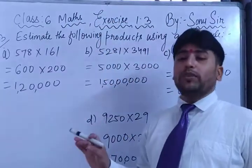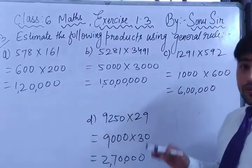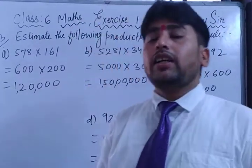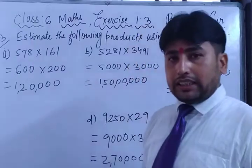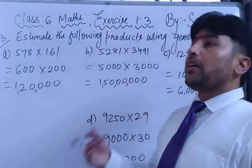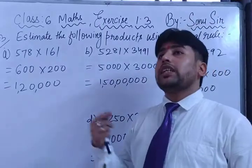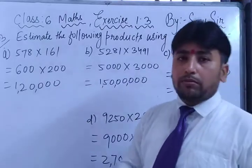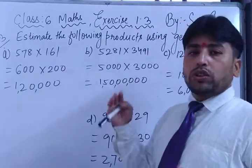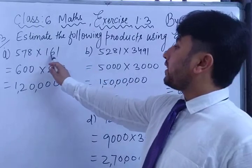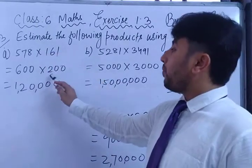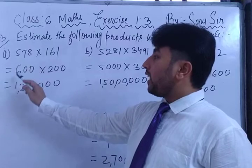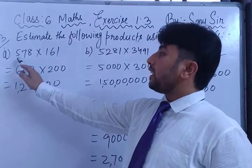This was the easiest question in the whole exercise. What we have to do is just find the nearest value — of tens, hundreds, or thousands, whatever the question is. The nearby value is found by checking: if the next digit is 5 or greater than 5, we increase by one. If it is less than 5 — like 4, 3, 2, 1 — we keep the lower value. For example, 578: the second digit 7 is greater than 5, so we round to 600.